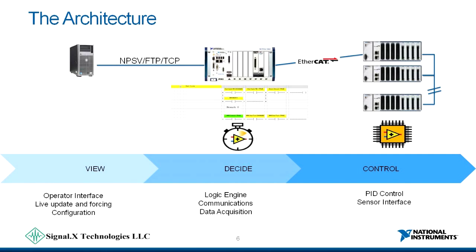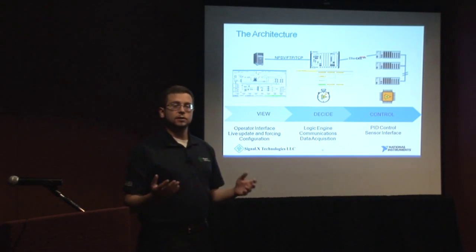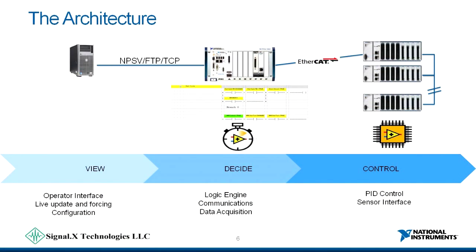To solve these challenges, we set up an architecture that broke up responsibilities for running the plant among the various computing elements involved. The Windows PC — just a standard PC — is only responsible for viewing what is happening at the plant. It's the primary operator interface used for configuration, forcing, and understanding what the plant is doing, but it's not required to operate. A lot of that responsibility resides at the real-time level with the PXI controller running LabVIEW Real-Time. It is a decision engine that uses our PAX technology to bring in all data from the control elements at the remote distributed EtherCAT chassis.